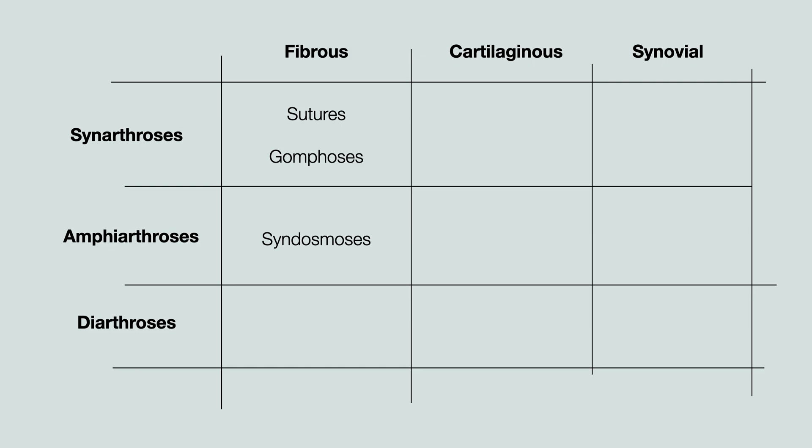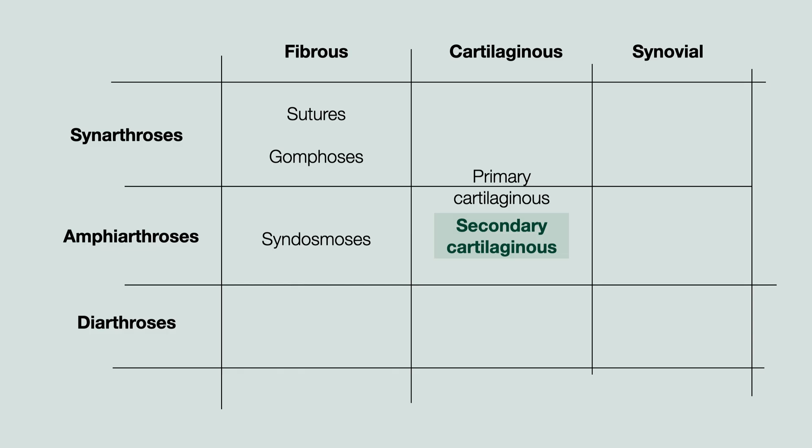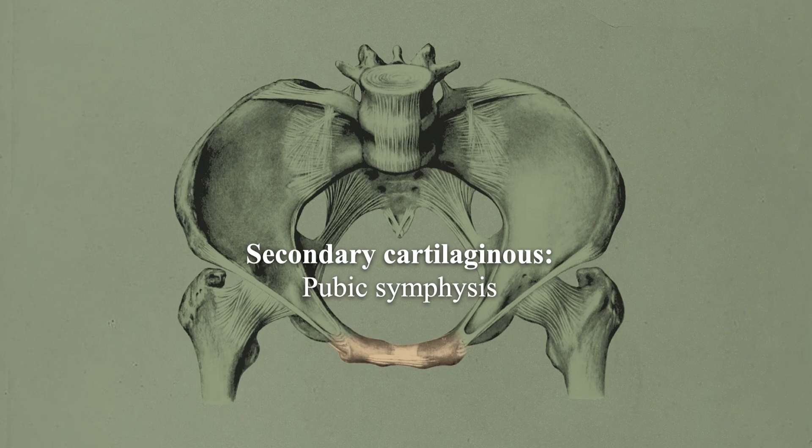Cartilaginous joints are formed by either hyaline or fibrocartilage. They are classified as either primary or secondary. Primary cartilaginous joints are formed by hyaline cartilage and are amphiarthroses or synarthroses. These exist between the epiphysis and diaphysis of growing long bone. Secondary cartilaginous joints can be formed by hyaline or fibrocartilage and are usually amphiarthroses, and a typical example is the pubic symphysis.